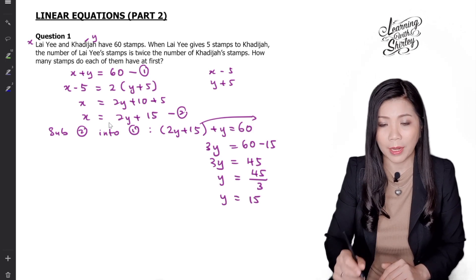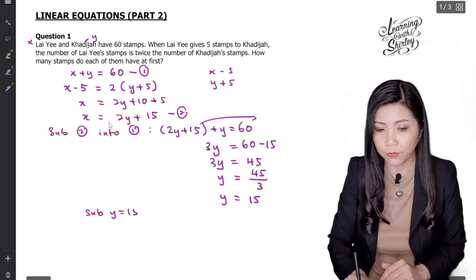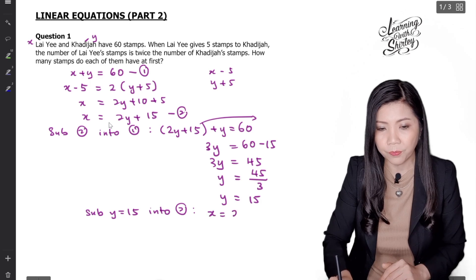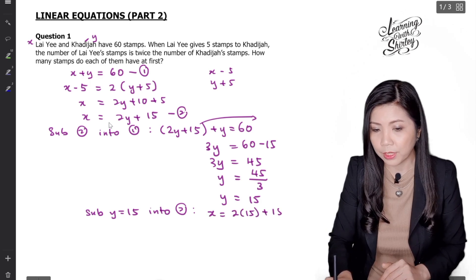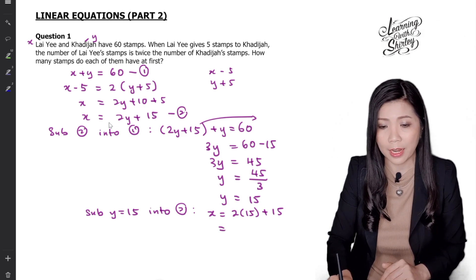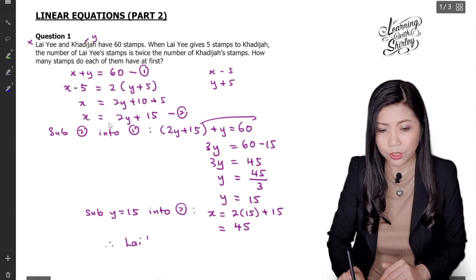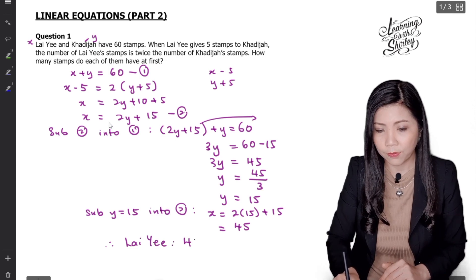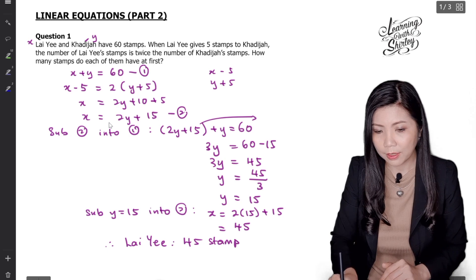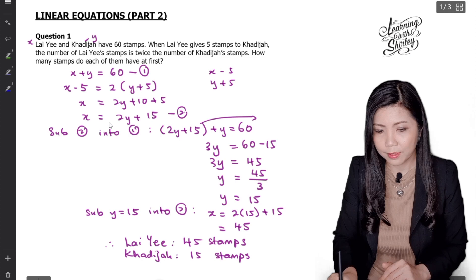Next I need to find X. I substitute Y equals 15 into equation 2. So equation 2 is X equals 2 times Y, which is 15, then plus 15. So 2 times 15 is 30, and 30 plus 15 is 45. Therefore Lahi, which is X, has 45 stamps. And Katija has 15 stamps. That's the answer.